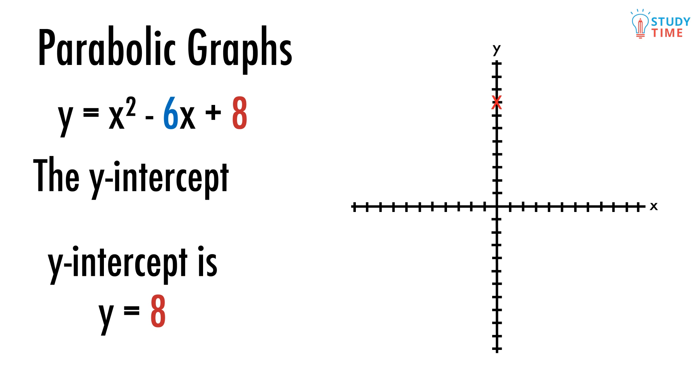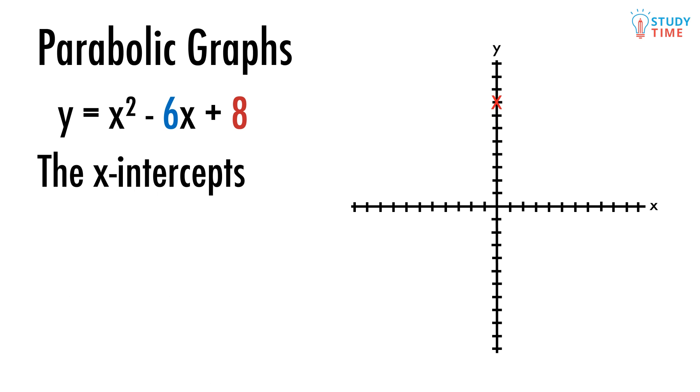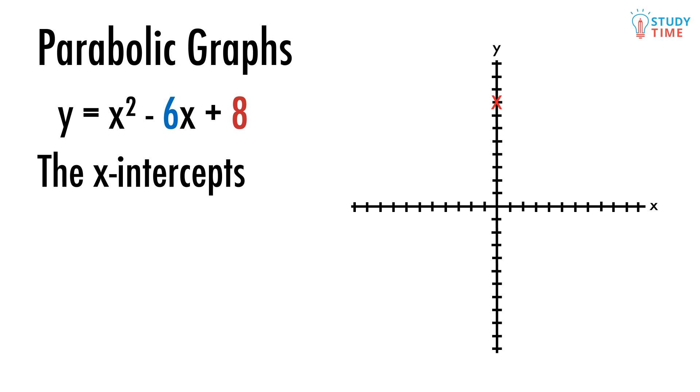Let's mark that on the graph. We can find the x-intercepts by factorising the quadratic. There are two x-intercepts because of the symmetry of the parabola. Remember, we factorise by finding two numbers that add up to make negative 6 and multiply to make 8.